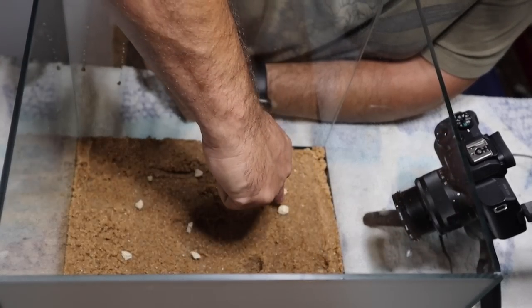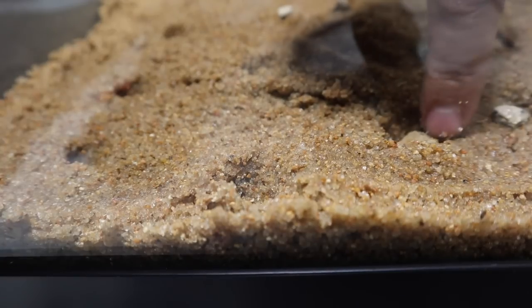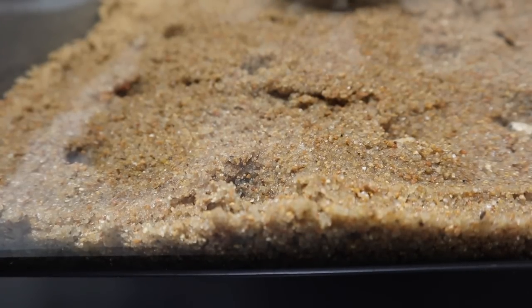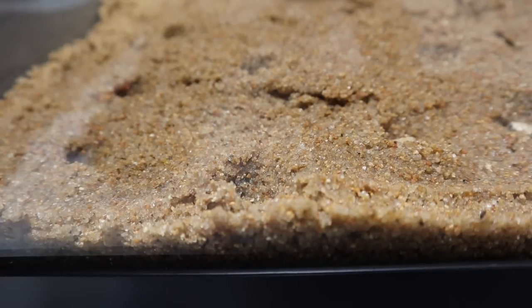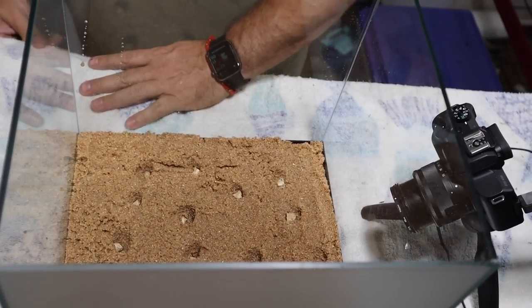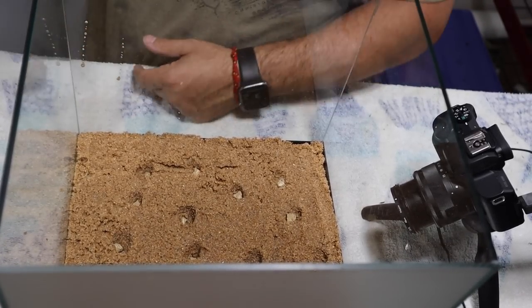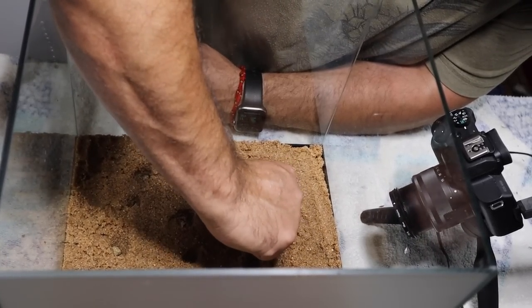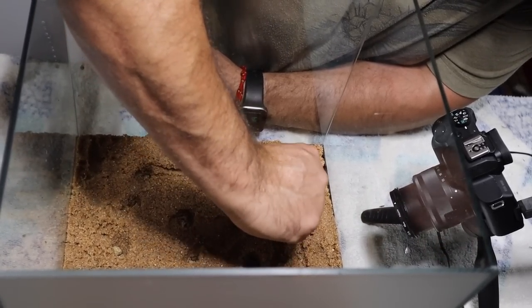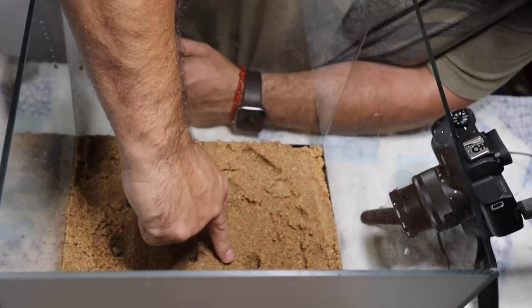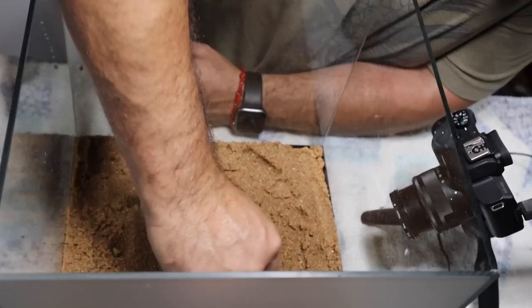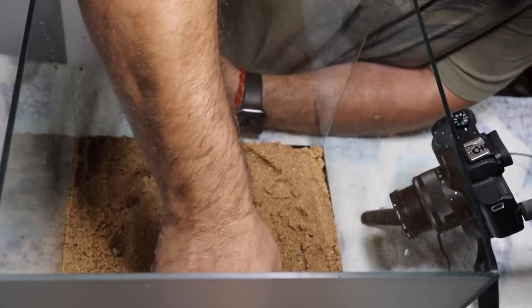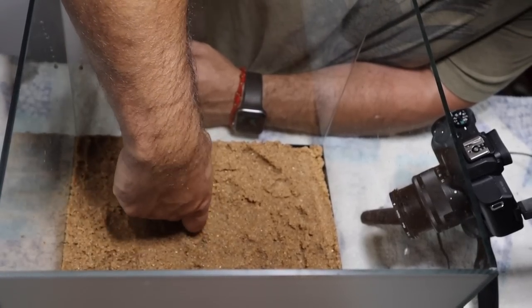The thing about this substrate is it has absolutely zero nutritional value for any kind of plants. So we use this for our root feeding plants, things like Amazon swords, broadleaf Ludwigia, stem plants that are rooted. Anything that has a root system on it that gets planted in the substrate for the most part is going to feed off of the roots. Any of your floating plants are going to feed from the water column. So now that we have these kind of pushed down in here, we're just going to kind of cover them up, and this will help our root feeding plants be able to survive in this setup since there is zero nutritional value in this particular type of substrate.